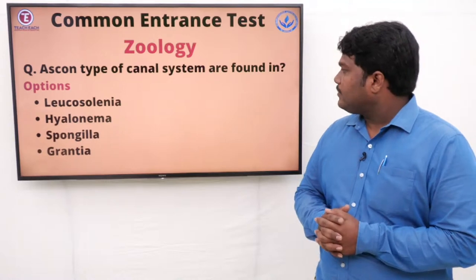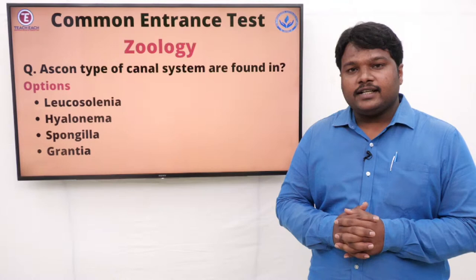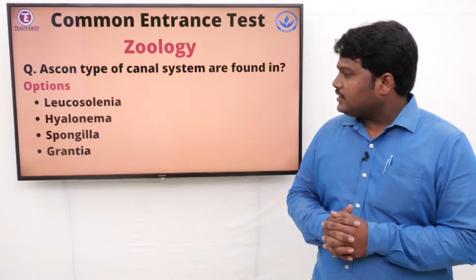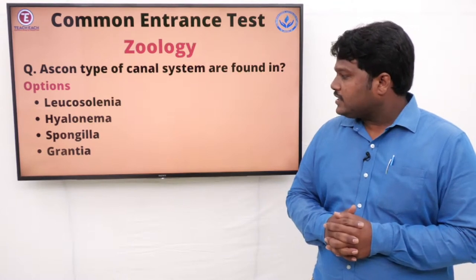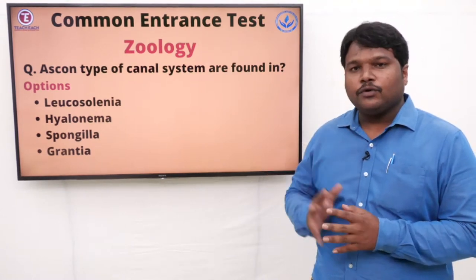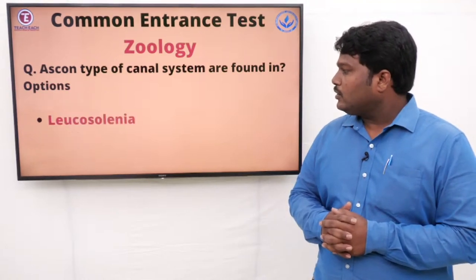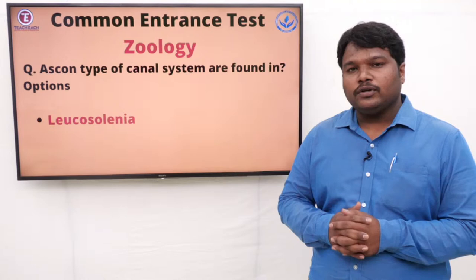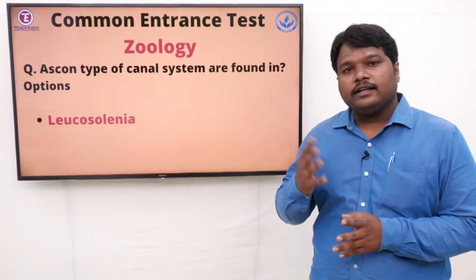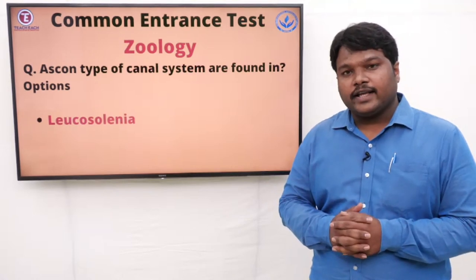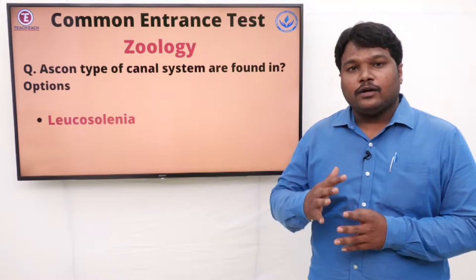Question 2: Ascon type of canal system is found in. Options: A) Leucosolenia, B) Hyalonema, C) Spongilla, D) Grantia. The right option is Leucosolenia. Leucosolenia has the Ascon type of canal system. The Ascon type of canal system is also called the Leucocanal system, so if you get a question about Ascon canal or Leucocanal, Leucosolenia is the right answer.